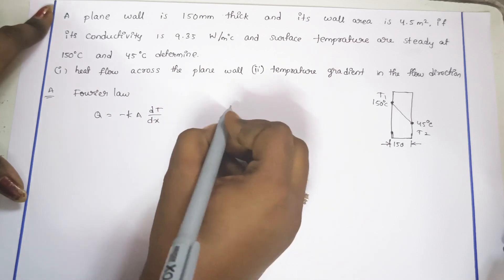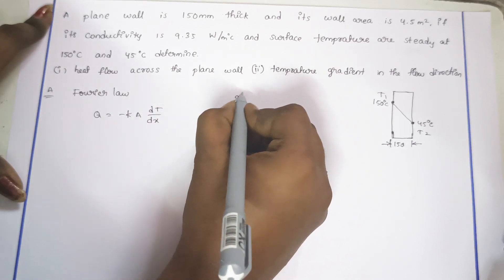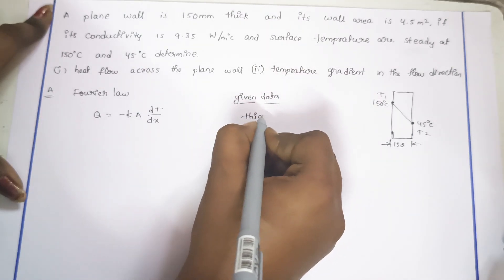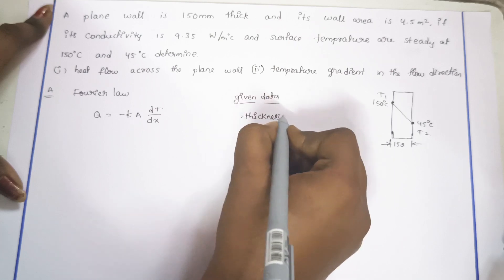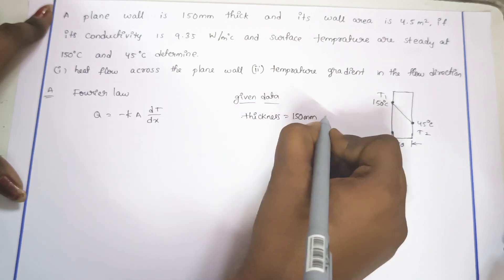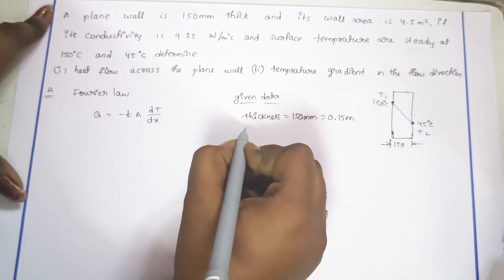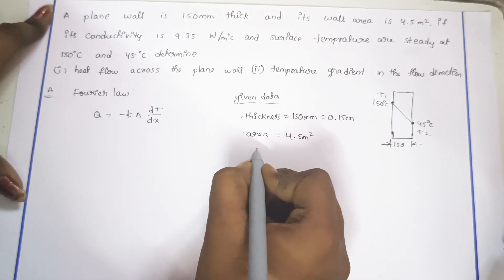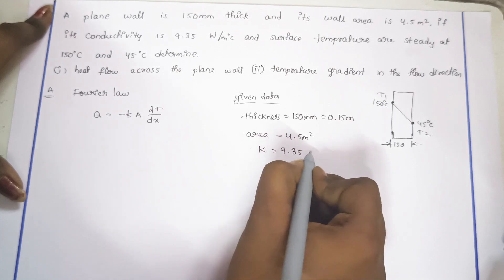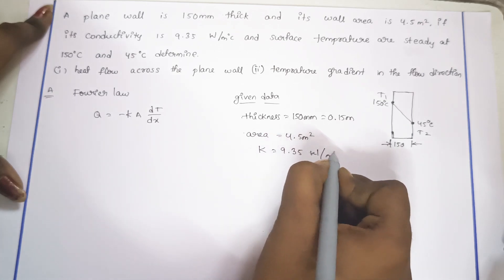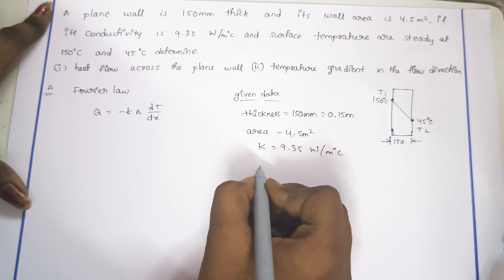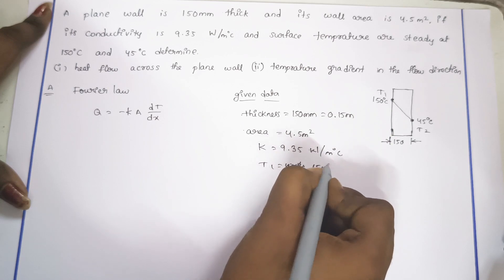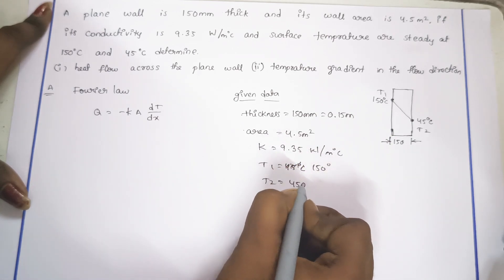First, the given data: thickness is 150 mm, which is 0.15 m. Area is 4.5 m². Thermal conductivity K is equal to 9.35 Watt per m degree centigrade. T1 is equal to 150 degrees centigrade, and T2 is equal to 45 degrees centigrade.